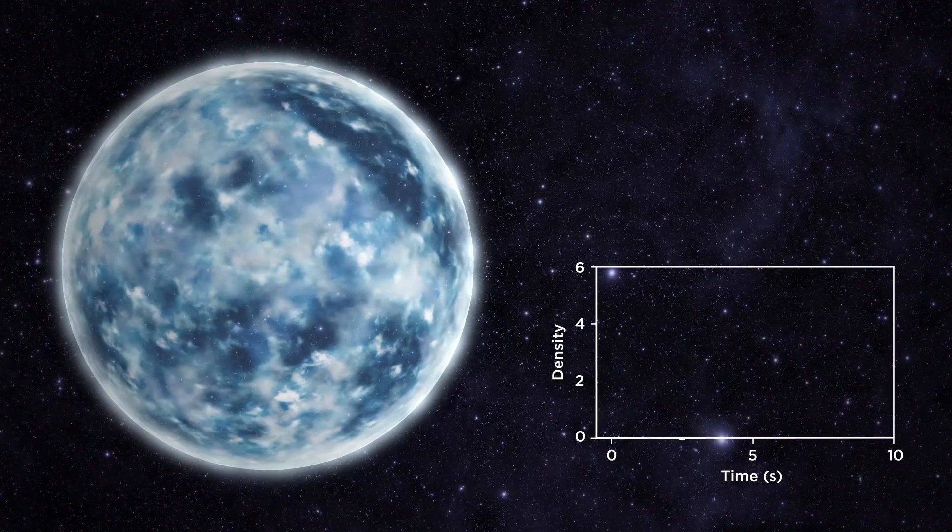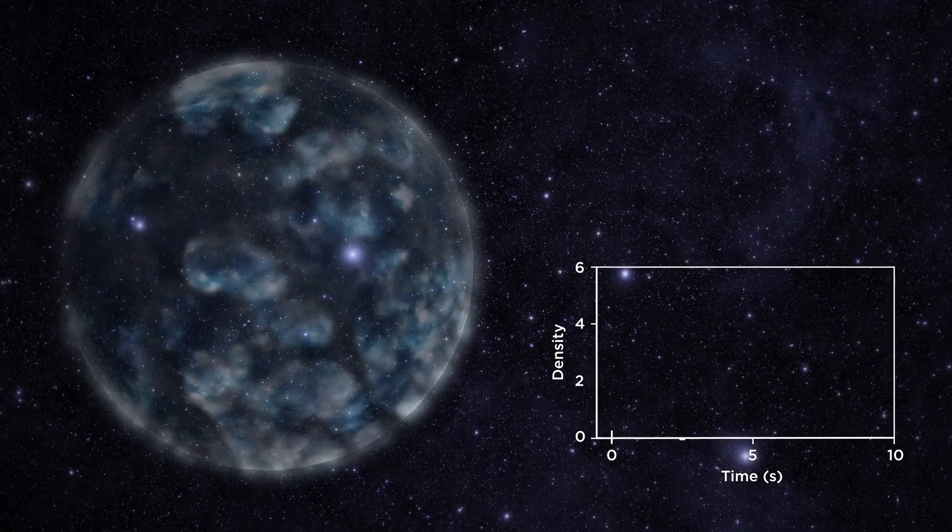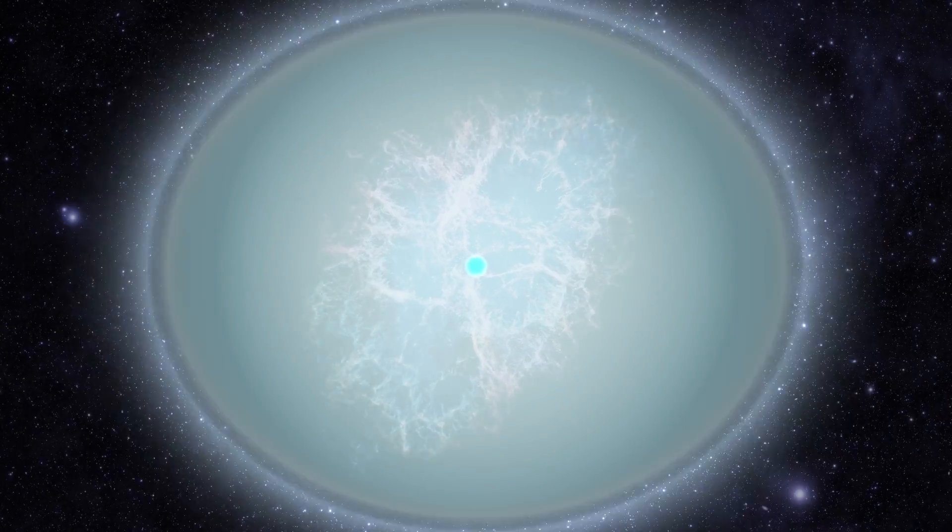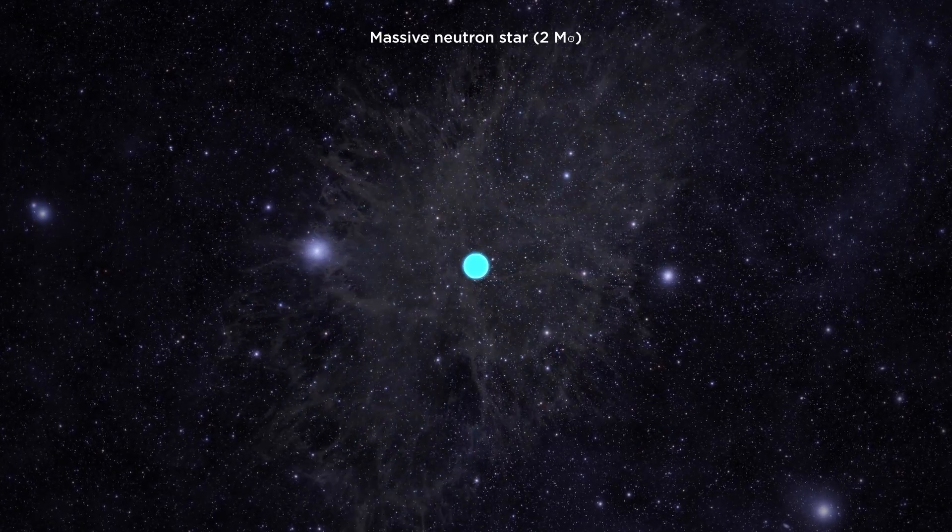The supernova proceeds now as a two-phase event. Firstly, the core collapses and transforms to the nuclear matter state. Secondly, this proto-neutron star develops a quark matter core which triggers the stellar explosion leaving a massive neutron star behind.